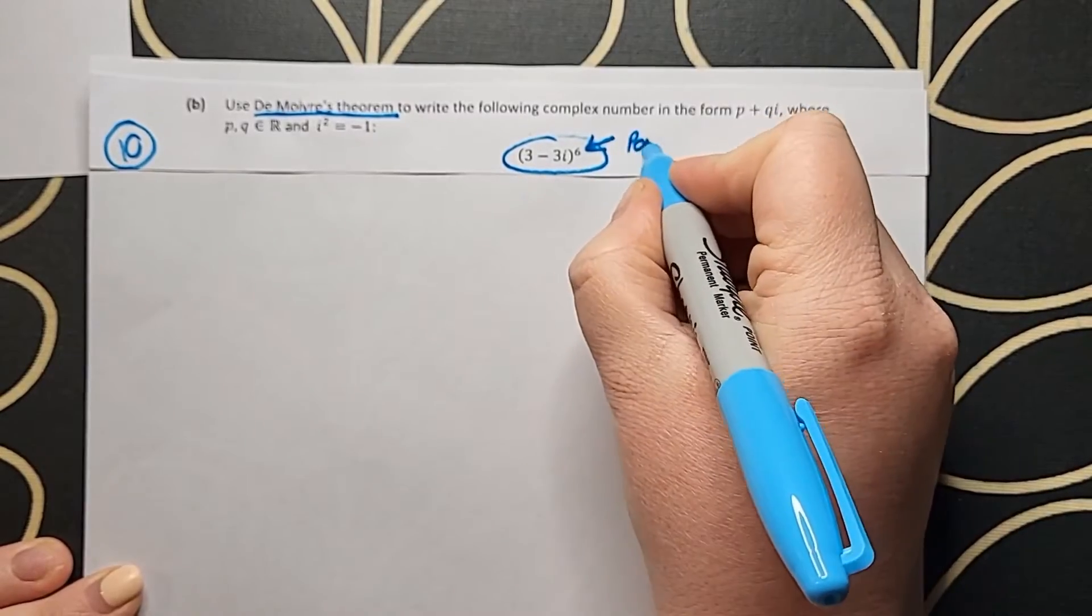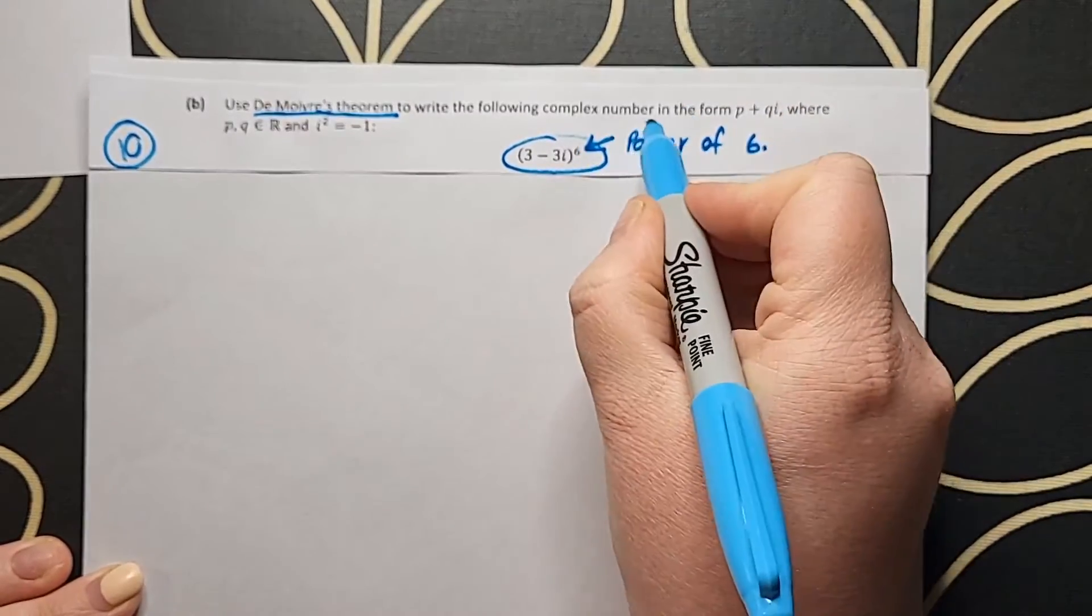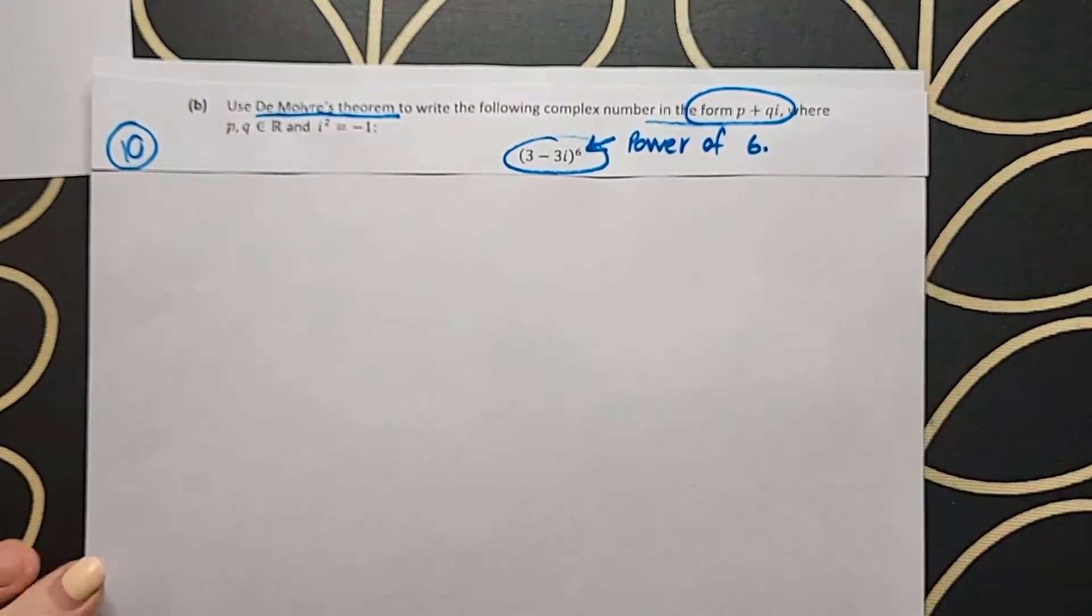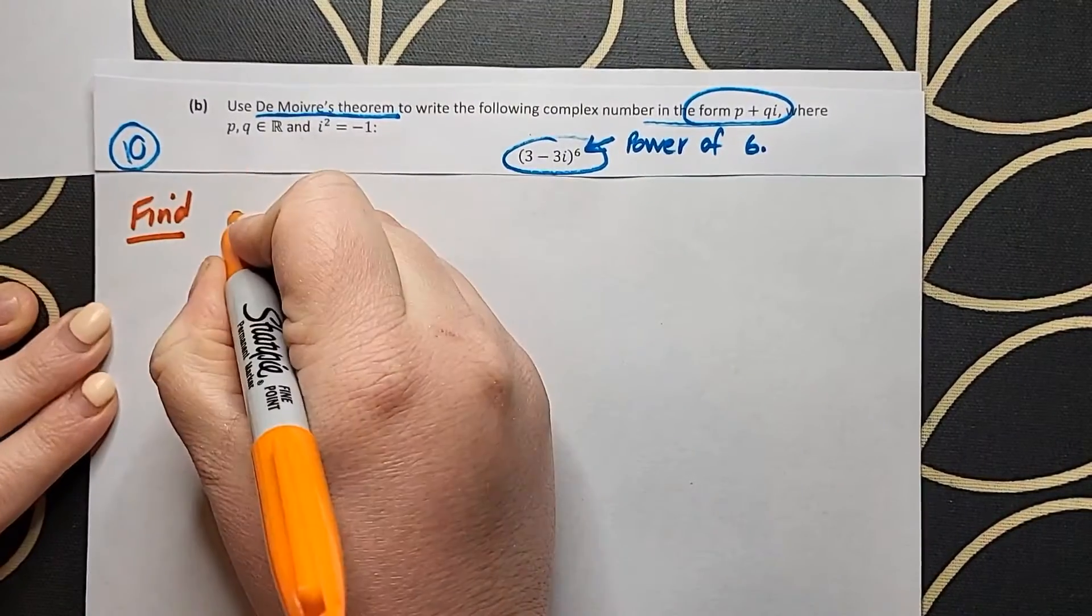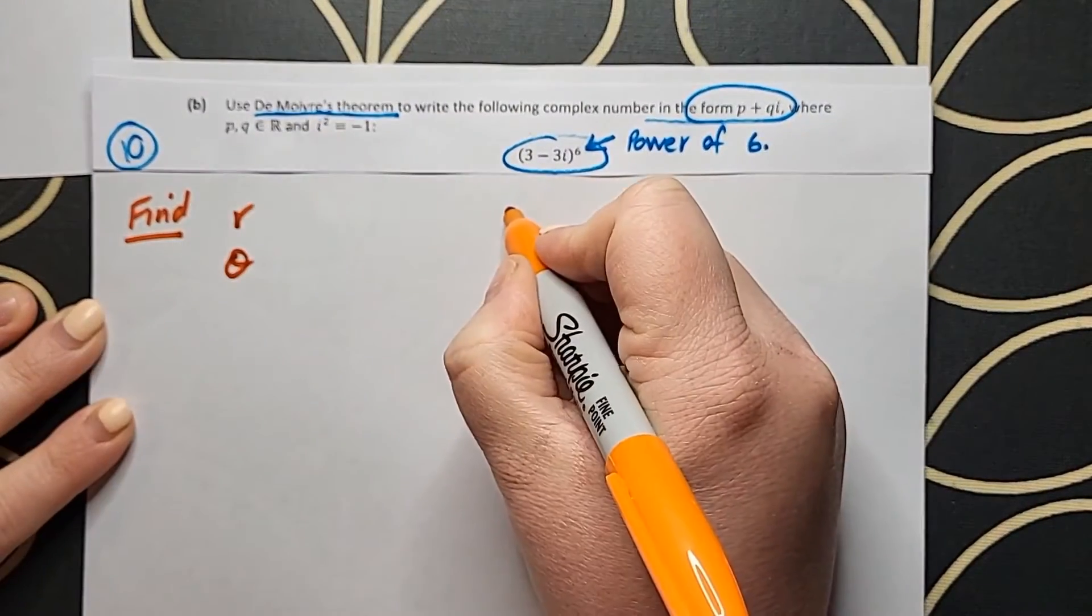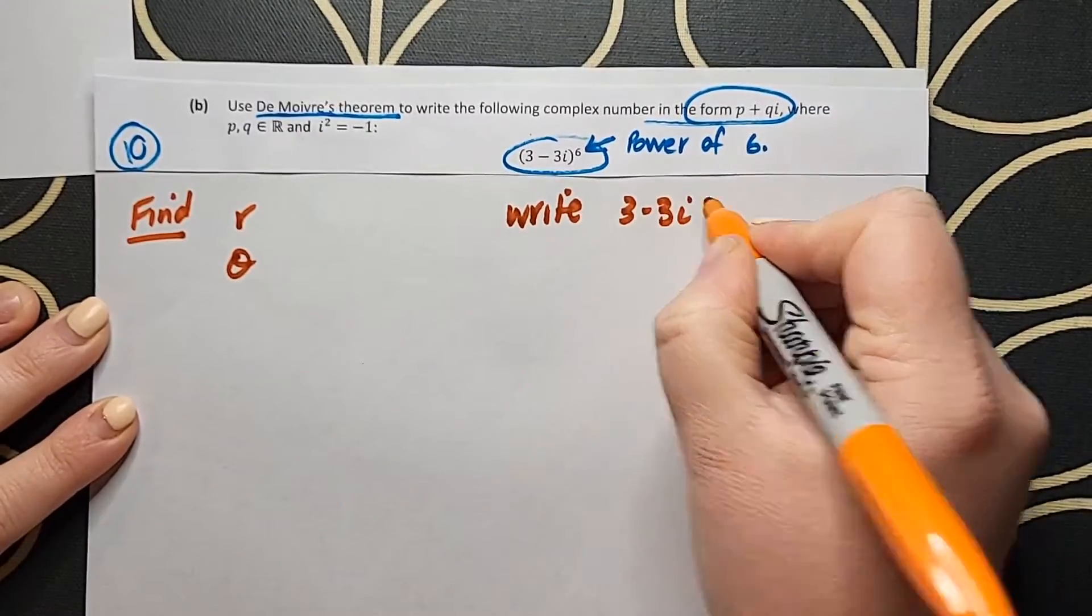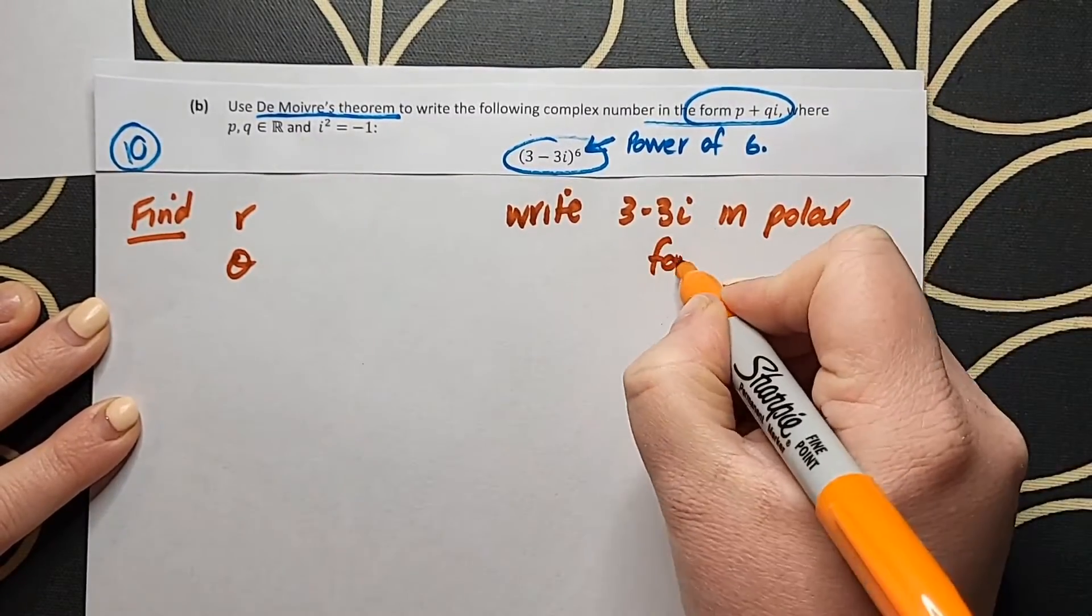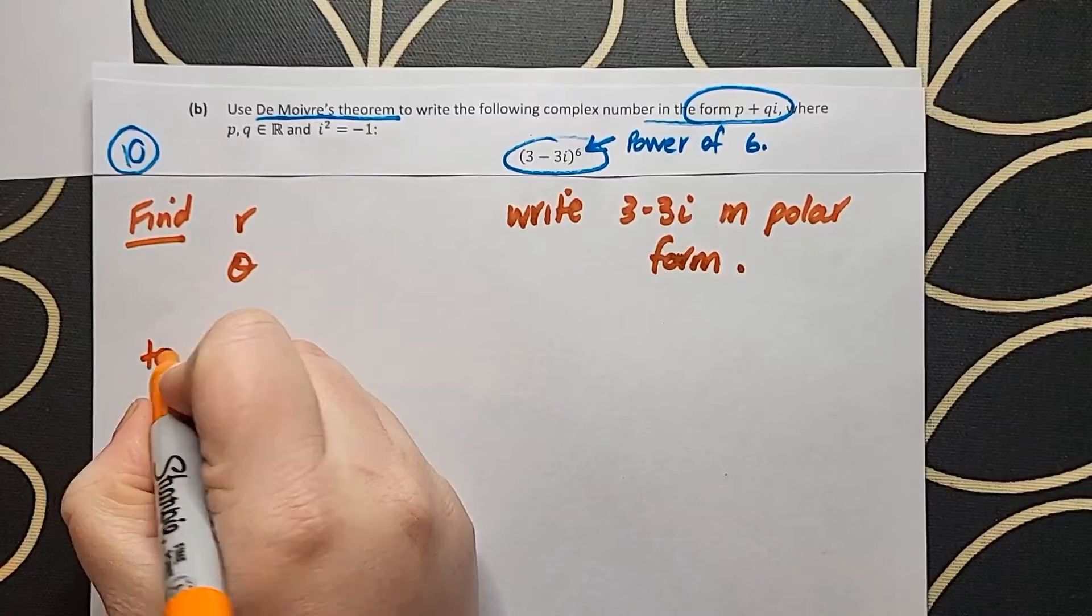Moving on to part B, they are asking us to use De Moivre's theorem to work out the value of 3 minus 3i all to the power of 6. De Moivre's theorem is meant to be a shortcut for you to be able to calculate a complex number to quite a high power, instead of you multiplying it out by itself 6 times.